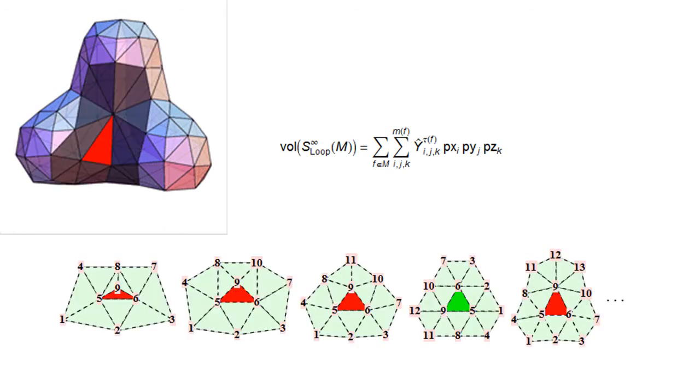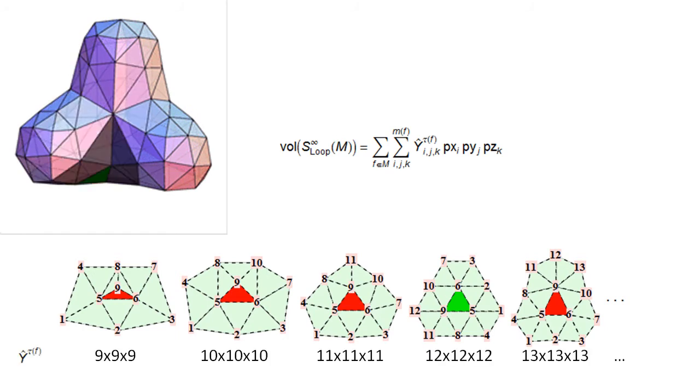The one ring depends on the valence of the non-regular vertex. Green indicates the regular topology. For each of these topologies, different trilinear forms apply. The dimensions are 9x9x9, 10x10x10, and growing.